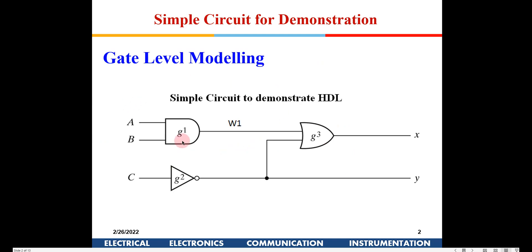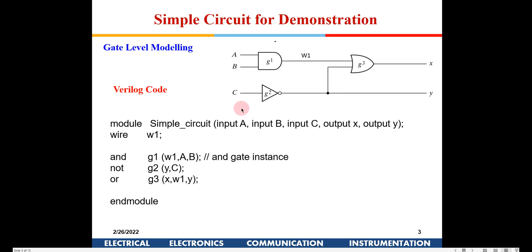In the last class we defined gates, inputs A, B, C, a wire, and two outputs. This is known as gate level modeling — when writing a program you specify what kind of gates need to be implemented. We declared a wire and three gates G1, G2, G3, and specified their inputs and outputs.